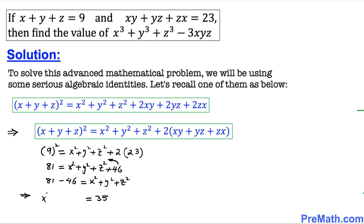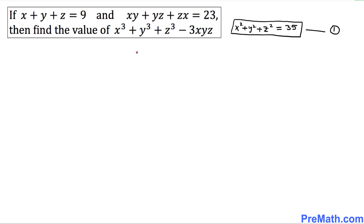That means x squared plus y squared plus z squared equals 35. Let's call this equation number one. Now let's move on to our next step. We've figured out x squared plus y squared plus z squared equals 35. Now we are going to focus on finding what we've been asked: x cubed plus y cubed plus z cubed minus 3xyz.